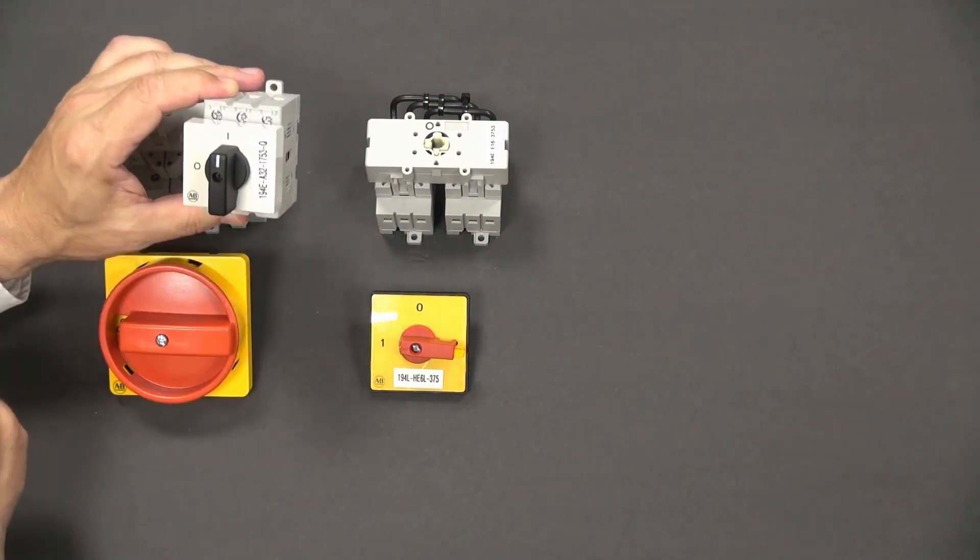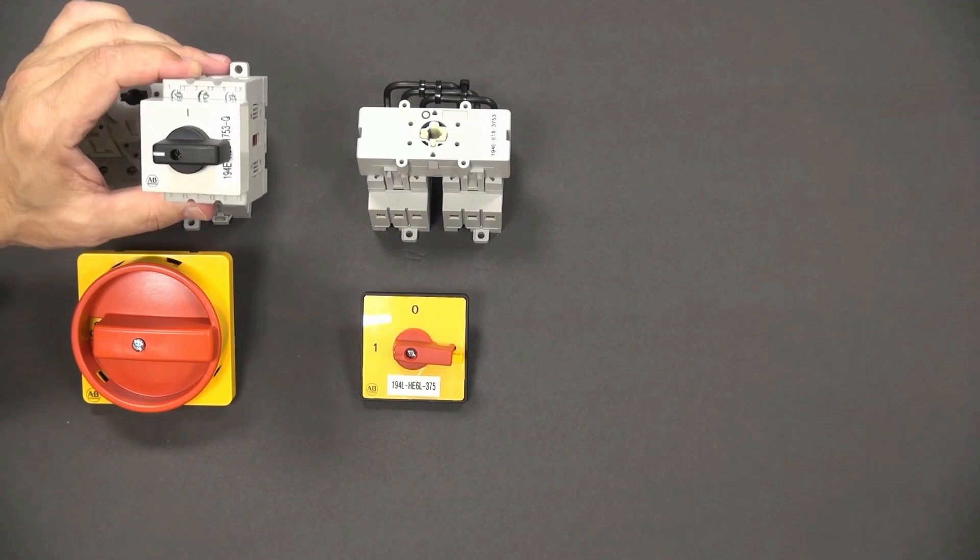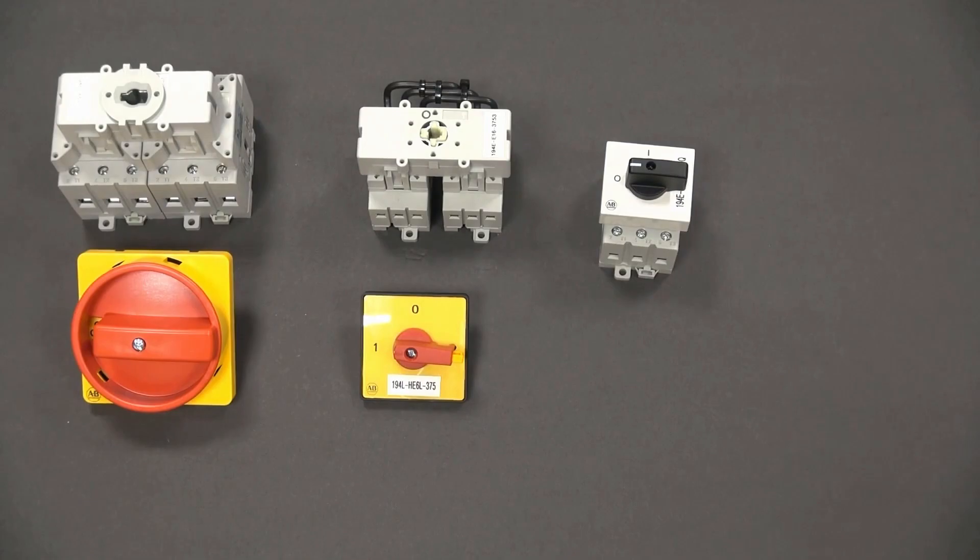This switch is then used as a means to disconnect all control power within the panel. This switch is available from 16 through 100 amps and can accommodate an additional power pole.